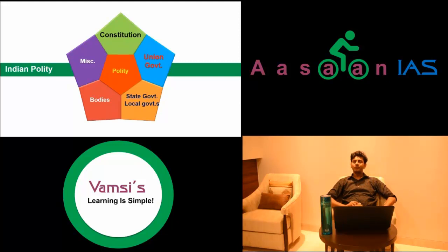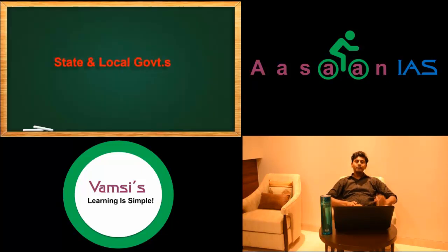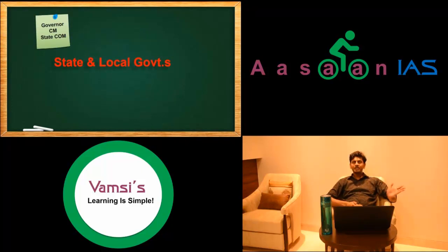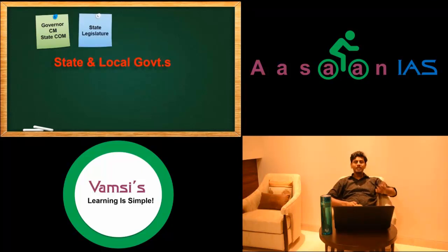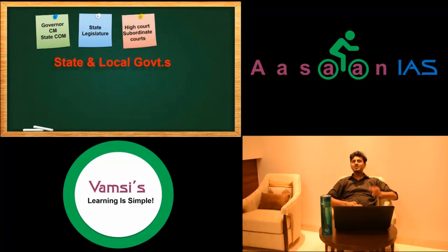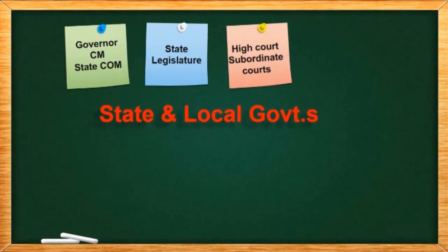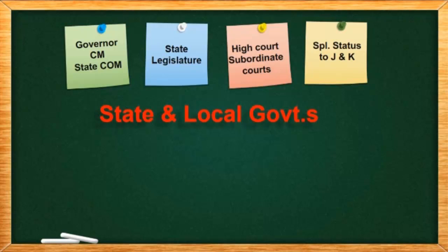Now we understand state government and local government. I further divide this into seven parts. First, I would like you to understand the governor, chief minister, and state council of ministers — about one and a half hours. Then we understand the state legislature — once you understand parliament, it won't be difficult, so this takes about one hour. Then we understand the high court and subordinate courts — about one hour. Then we understand the special status of Jammu and Kashmir under Article 370 — about one hour.